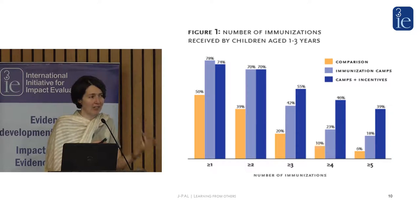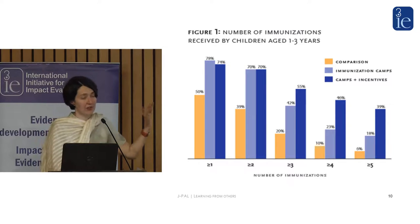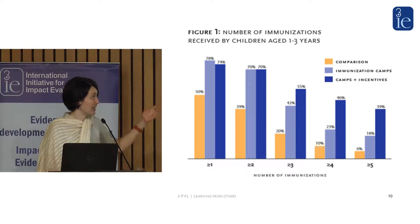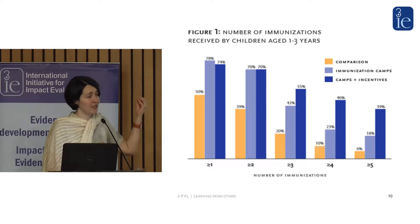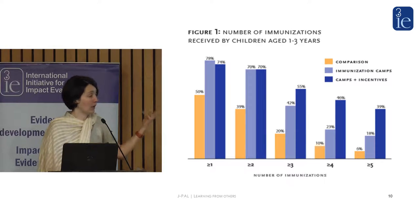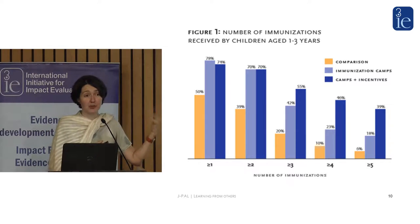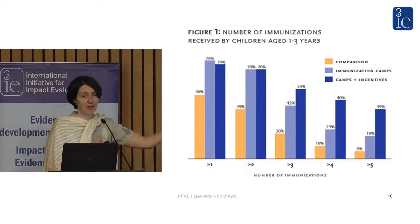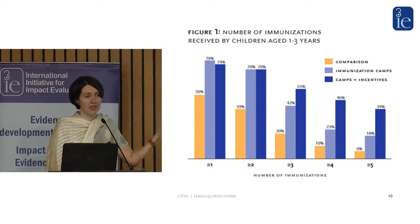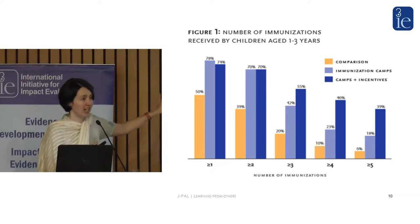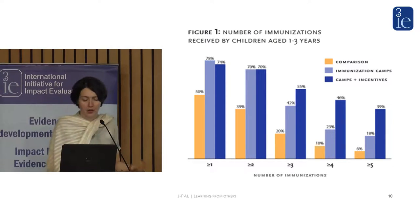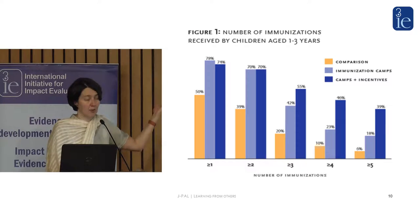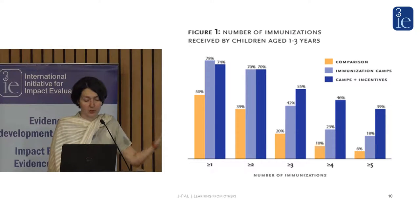What we learn from this is about what these different interventions are fixing and what they tell us about behavior — what are the barriers? The immunization camp helps people start, while the incentive helps people persist, which fits very well with behavioral theories about what the barrier to preventative health is: you have a cost now with a benefit later, and people procrastinate and put it off. It's not that they have a deep objection to immunizations — if they did, they wouldn't get that first shot. The theory we had going in was very much supported by this evidence.